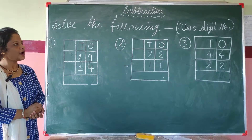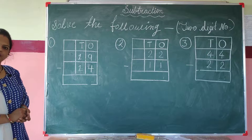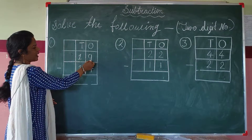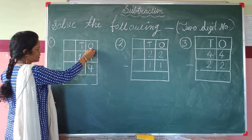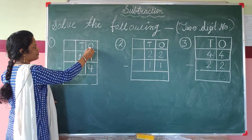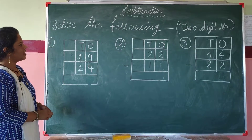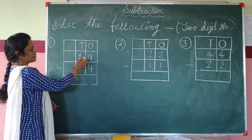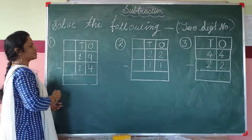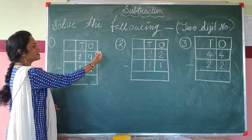Students, look at the blackboard. Solve the following 2-digit numbers. We just learned how to solve 1-digit numbers; now we will solve 2-digit problems. This is number 19 — 9 is at the 1's place and 1 is at the 10's place. This is number 14 — 4 is at the 1's place and 1 is at the 10's place. When solving 2-digit subtraction, we must always solve from the 1's place — that means from the right side.